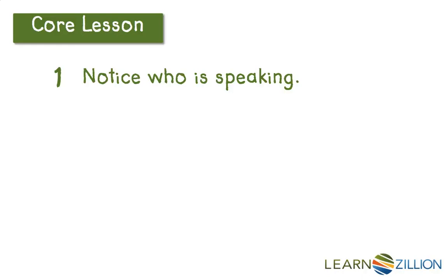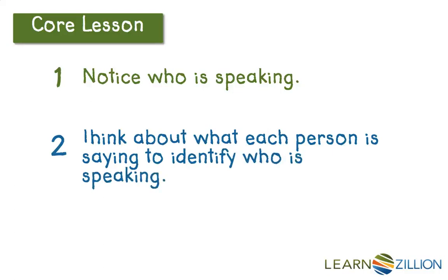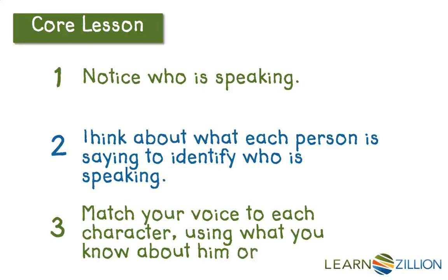First, I can notice who's speaking. I'll highlight the characters' names to help me remember. Then I'll re-read the dialogue and think about what each character is saying to try to identify who's speaking. I'll highlight the dialogue in different colors so I don't get confused. Then I'll think about what I know about each character — is she old or young, nice or mean, happy or sad? And I'll re-read the passage out loud, and when each character speaks, I'll match my voice to that character using what I know about him or her.